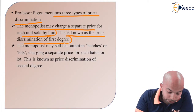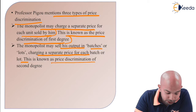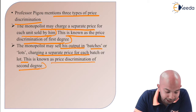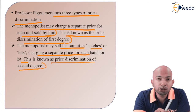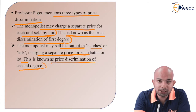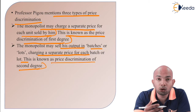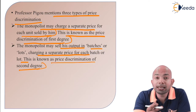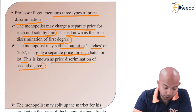The monopolist may sell his output in batches or lots, charging a separate price for each batch. This is known as price discrimination of the second degree. Where every unit is sold at a different price, that is first degree price discrimination. Where specific products are sent out in batches and lots and every lot is priced differently, that is second degree price discrimination.